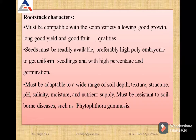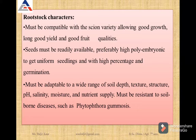Rootstocks must be compatible with the scion variety, allowing good growth, long yield, and good fruit quality. Seeds must be readily available, preferably highly polyembryonic in nature so that we can get uniform seedlings with high germination percentage. Rootstocks must be adaptable to a wide range of soil depth, texture, structure, pH, salinity, moisture, and must be resistant to soil-borne diseases such as Phytophthora gummosis.